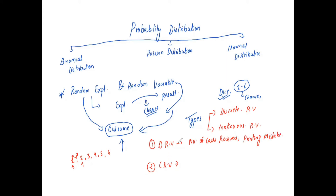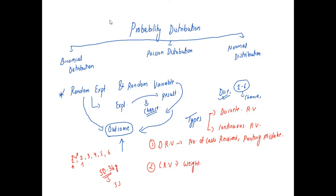For a continuous random variable, consider weight as an example. A weight might be 50 kg or 50.3 kg — values exist in between integers. Another example is amount of rainfall, which can take values like 1.9 — non-integer values between integers. These are continuous random variables.